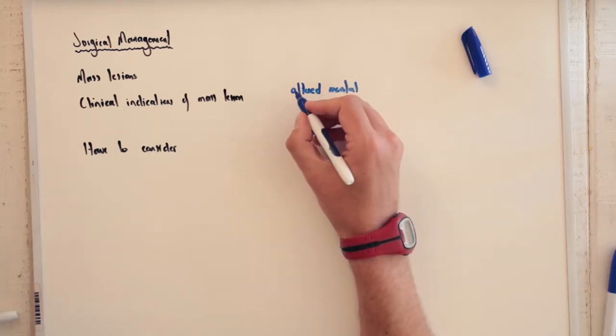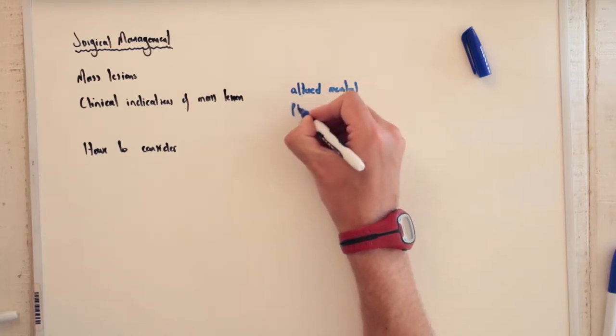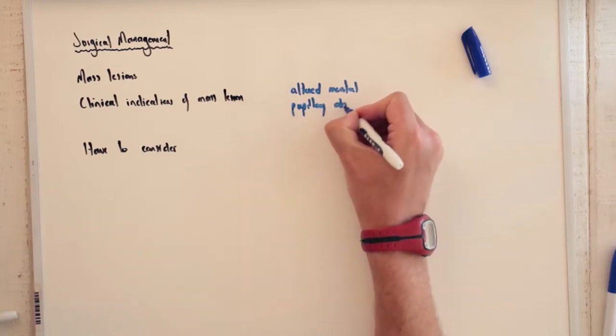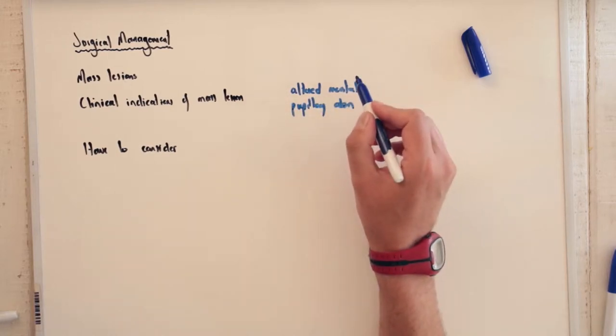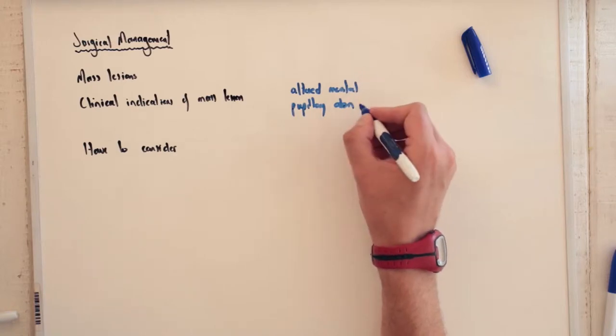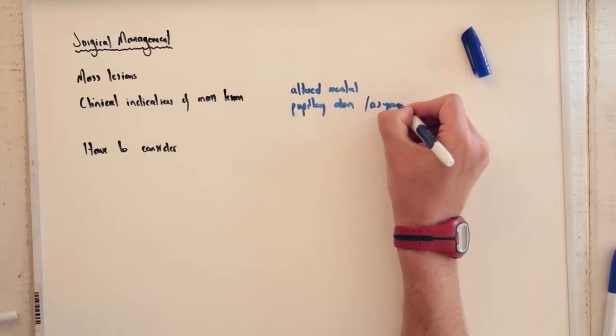People with pupillary abnormalities, usually unilateral pupil dilatation or let's call it pupil asymmetry.